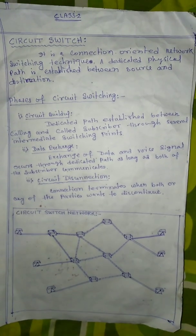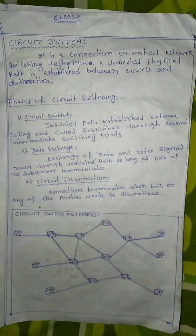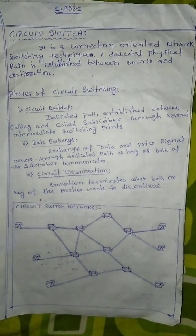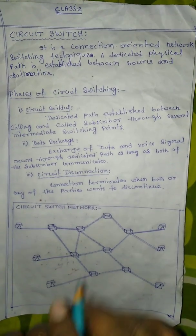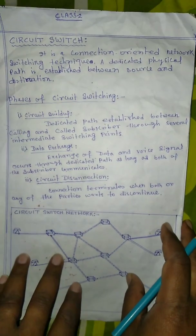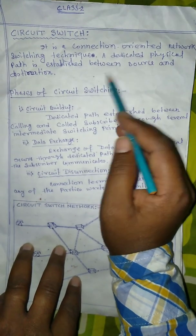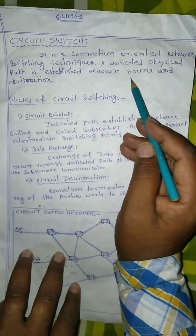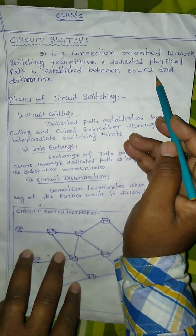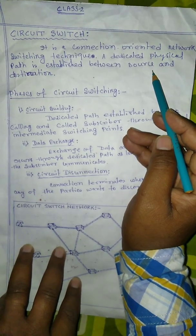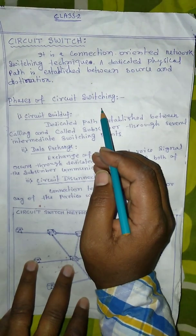Welcome to telecommunication engineering class number two. Today we will discuss circuit switch and packet switch networks. Circuit switch network is basically a connection-oriented switching technique where there should be a dedicated path between the calling subscriber and the called subscriber.